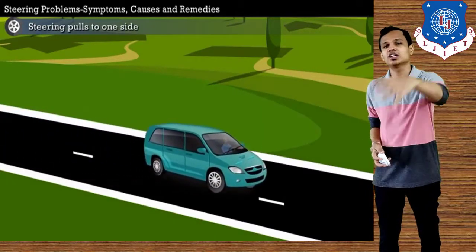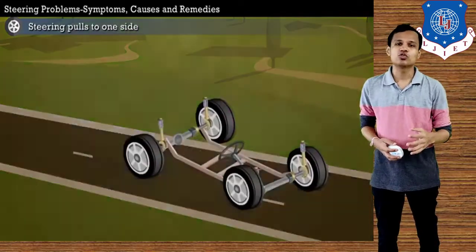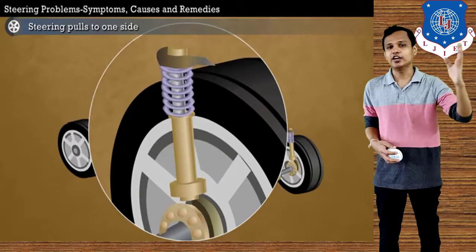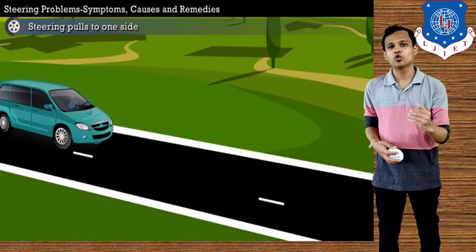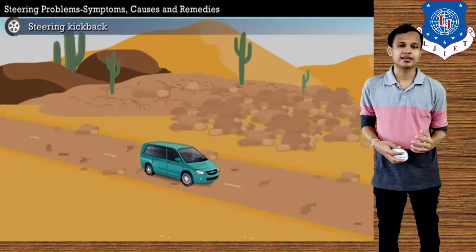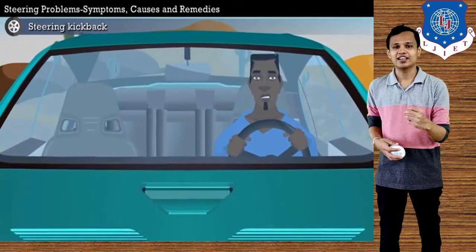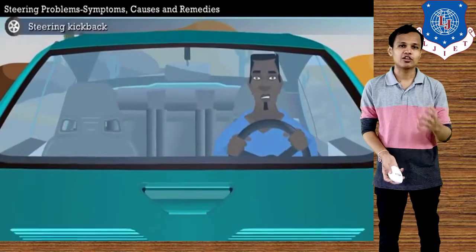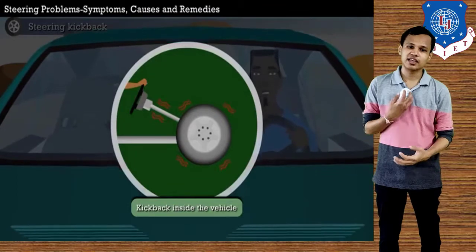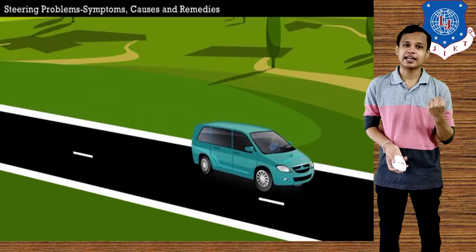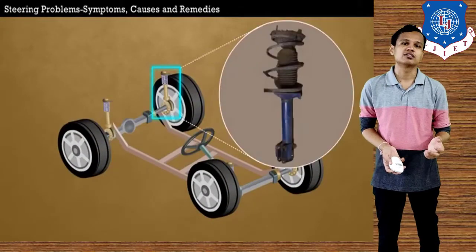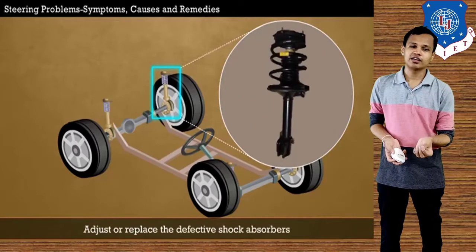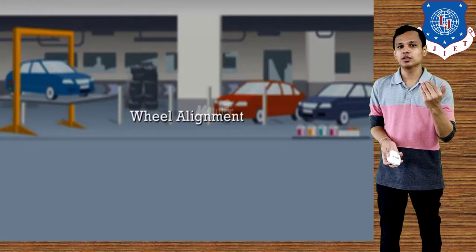Steering can pull towards one side — that is known as a strong steer. If the steering is getting pulled towards one side, the problem can be in the suspension system as well. If the suspension is broken, the steering will tend to move towards one direction even though we want to go straight. Steering kickback can happen on hard surfaces or roads with too many uneven sections — bumps and potholes can also create kickback towards the driver. On smoother roads, kickback could indicate a problem in the suspension system. If the shock absorber is older, it can create steering kickback, so we adjust and replace the defective shock absorber.